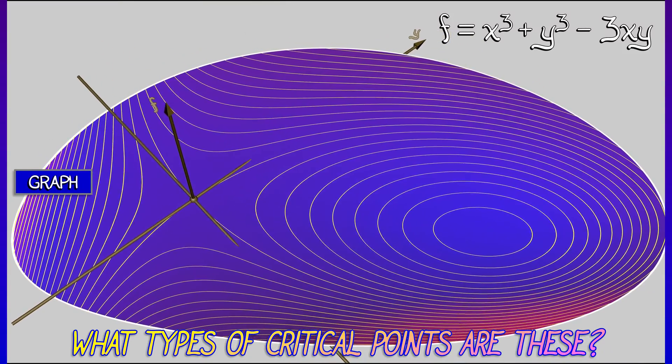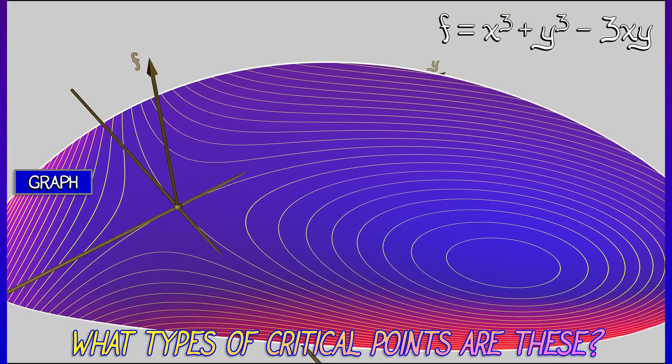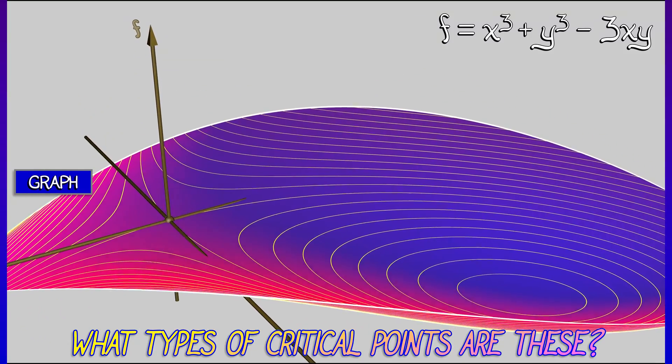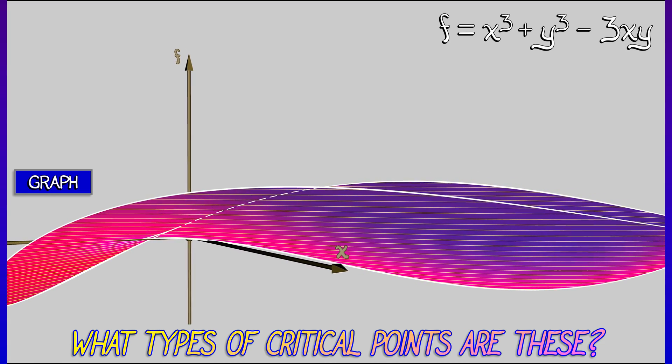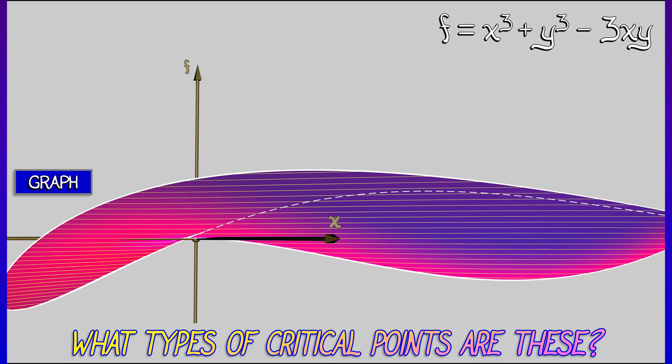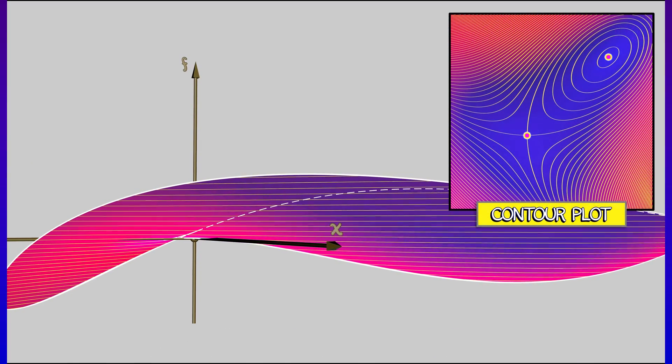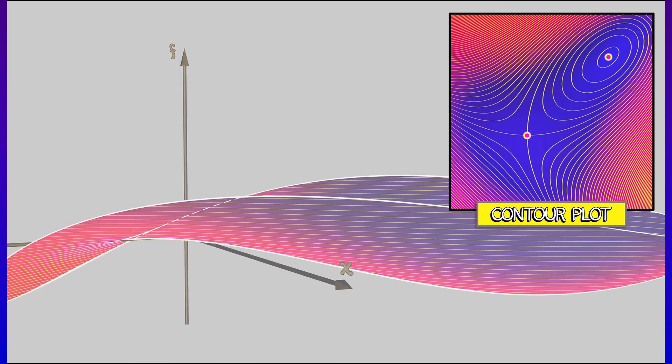From a contour plot, it's, well, it's a little weird. I'm maybe not so sure what to make of this. But it does seem as though one of those critical points is a local min. Maybe if we zoomed in and looked more carefully, we could verify this.